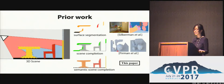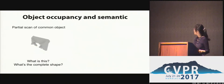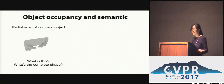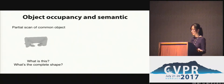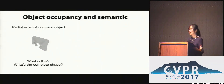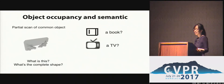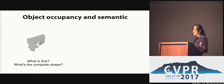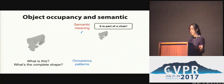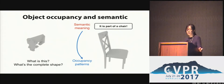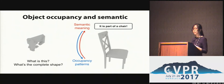To further convince you of this point, here is a partial scan of a common household object from a depth scan. Can you tell what this object is, and what its complete shape would be? You might guess a book, a TV, or part of a bed. But what if I tell you it is actually part of a chair? Then imagining its complete shape becomes a lot easier. And similarly, if I directly show you the complete shape, you have no problem recognizing it. This example demonstrates the coupled nature of these two problems — knowing one makes the other a lot easier.